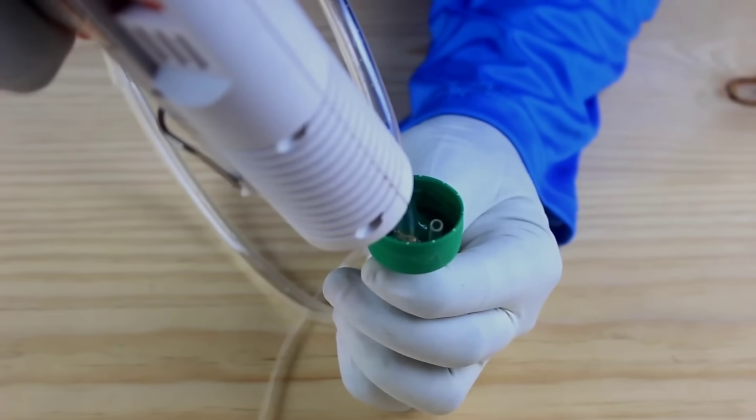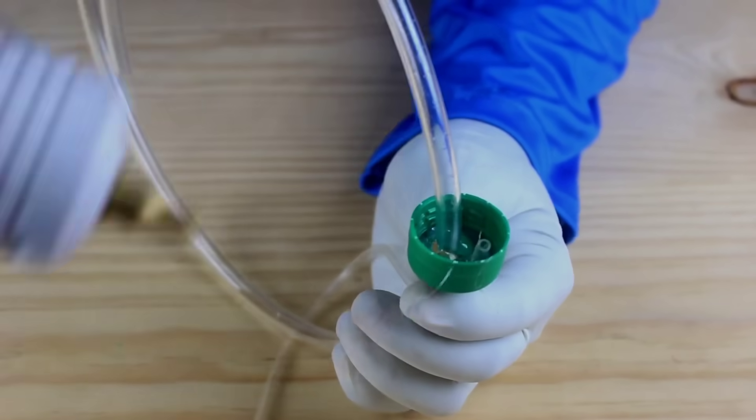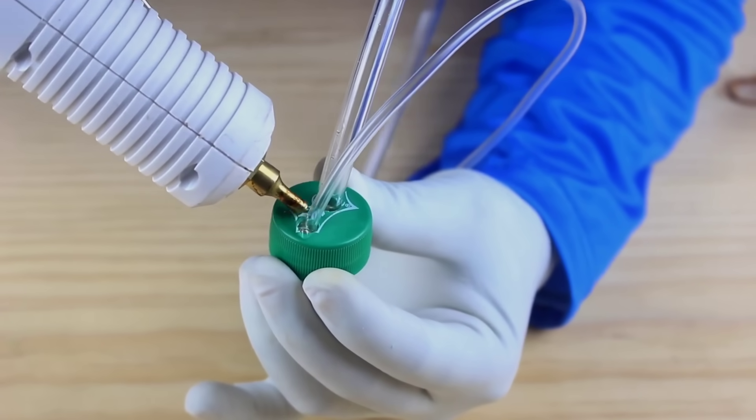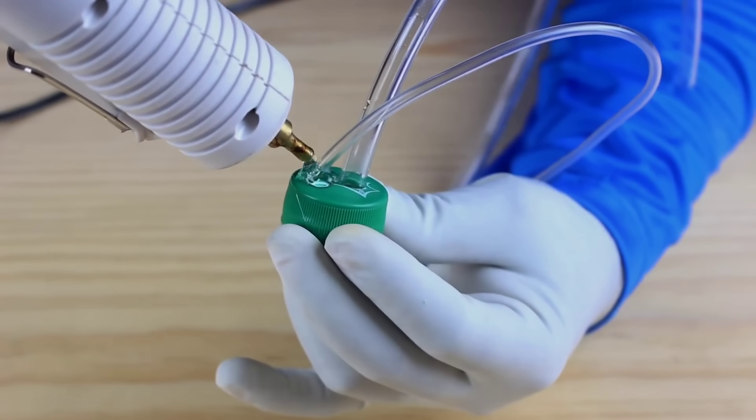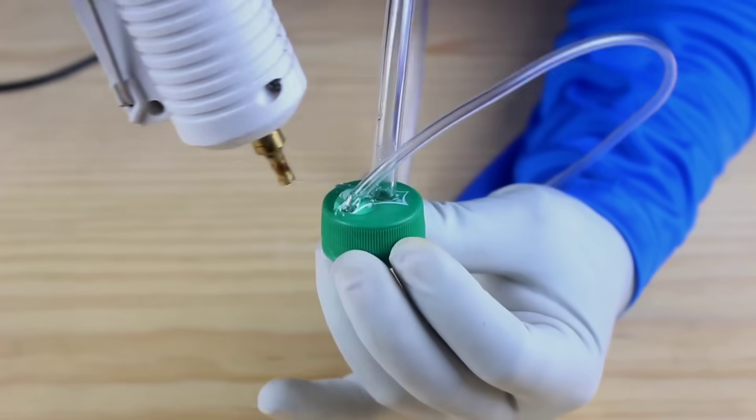Now let's talk about the outer shell or the body of the cold drink dispenser. Instead of using plastic or metal, I went with a more DIY friendly and budget option. I crafted the entire dispenser body using cardboard.